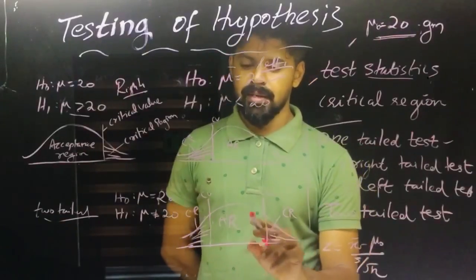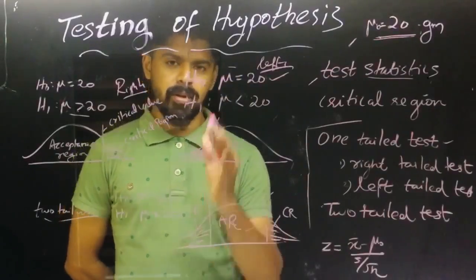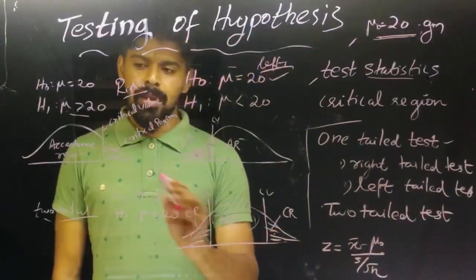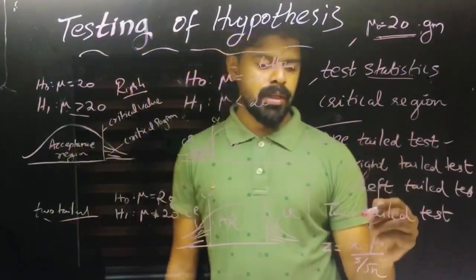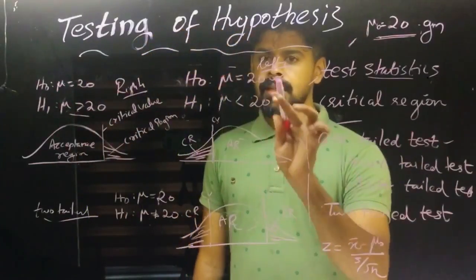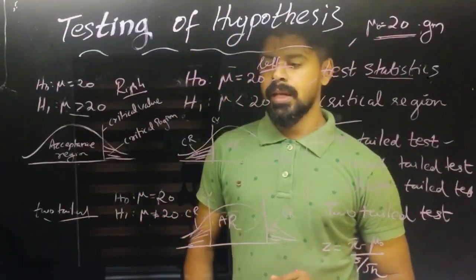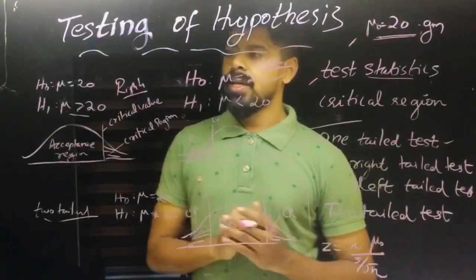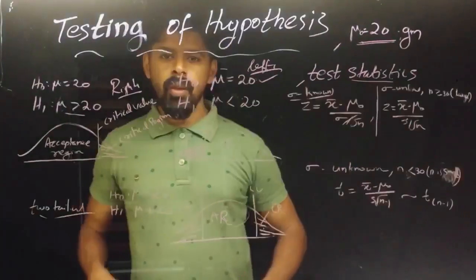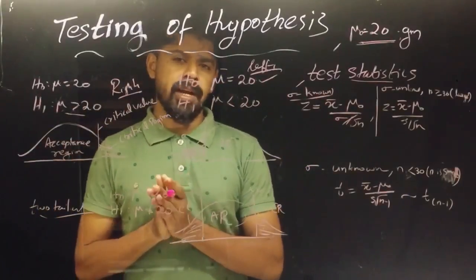The acceptance region is in the middle. For a two-tailed test, we use modulus of Z to calculate. We can explain the right-tailed, left-tailed, and two-tailed tests, and the 5% significance level is commonly used.